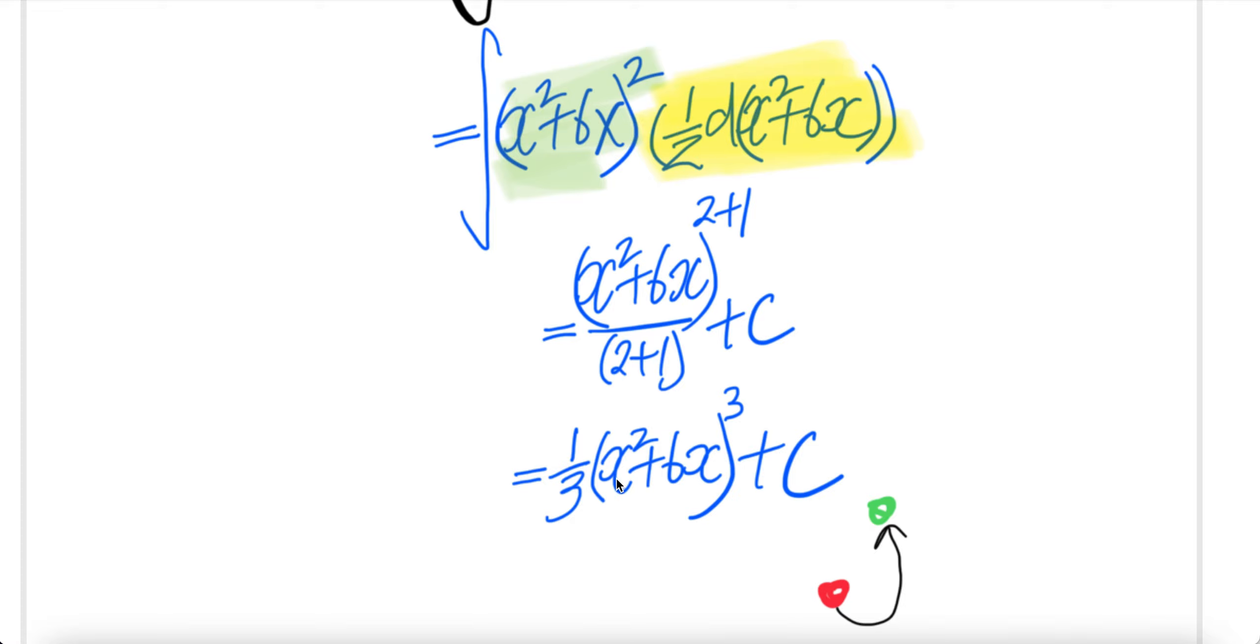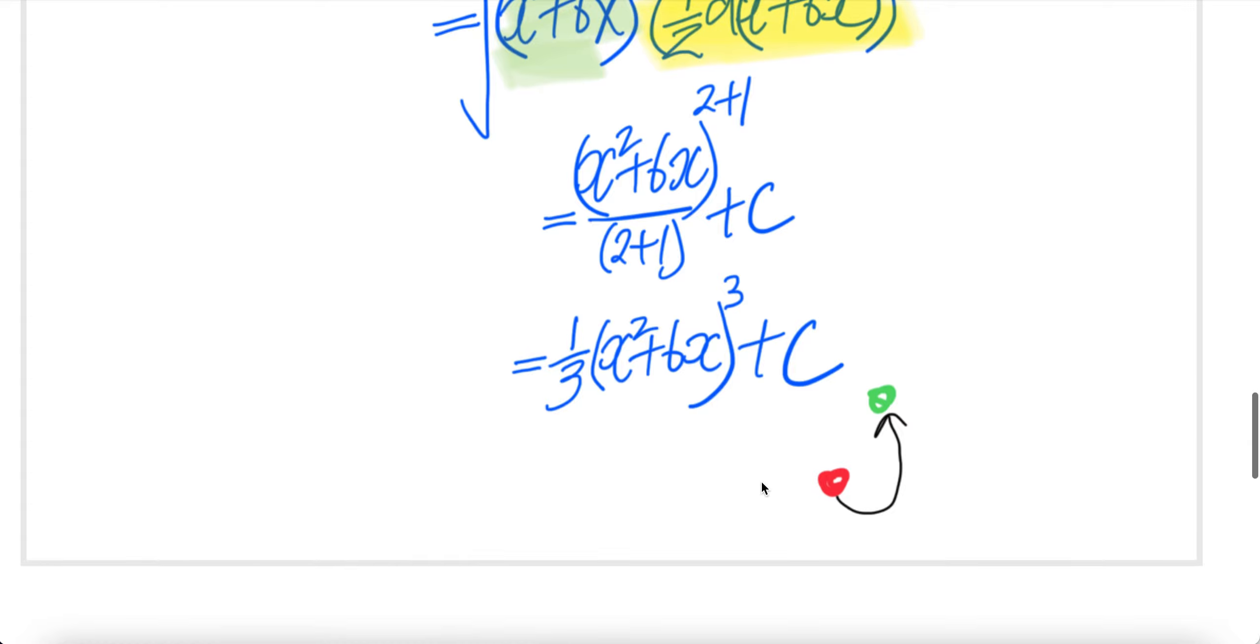This is 1 over 6, not 1 third because there's a half here. x squared plus 6x to power 3. Done.